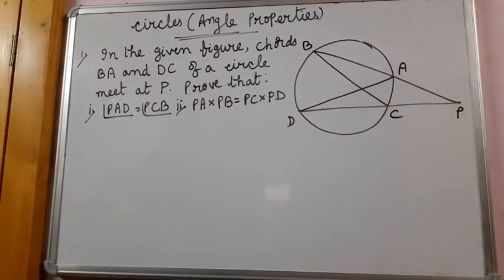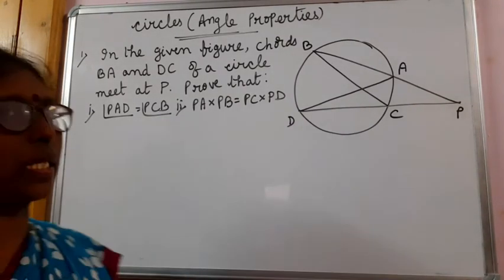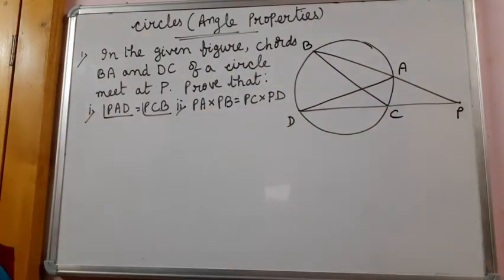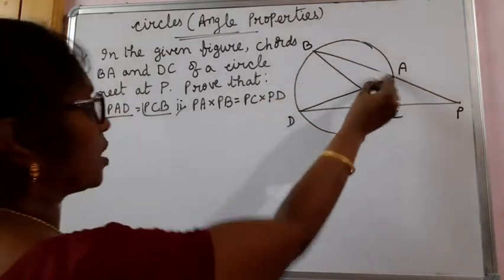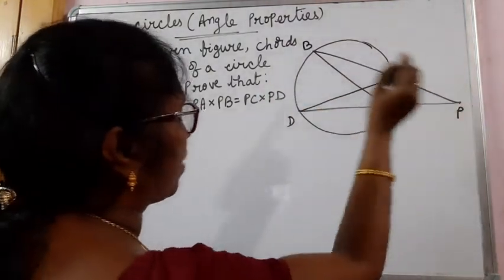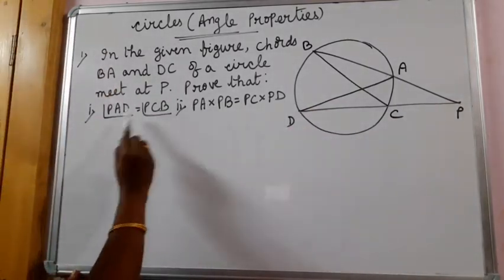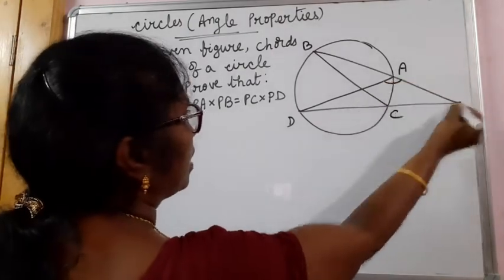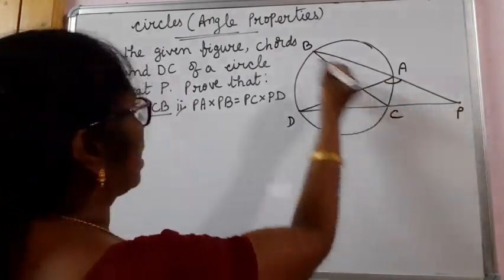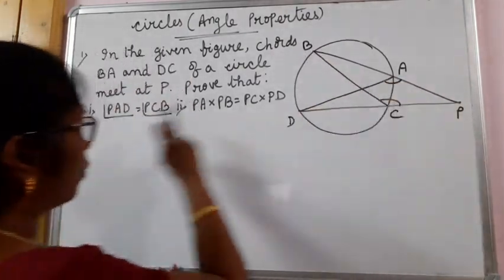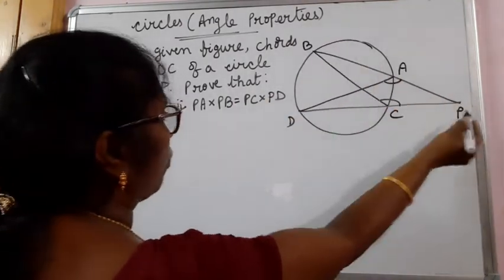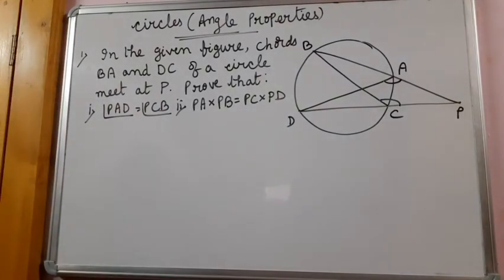Hello, let us have a problem today based on the circle chapter angle properties — a figure-based question. This is the given figure. It is given that chords BA and DC are produced to meet at P, and you have two proofs to do. One is angle PAD is equal to angle PCB, and PA into PB is equal to PC into PD.